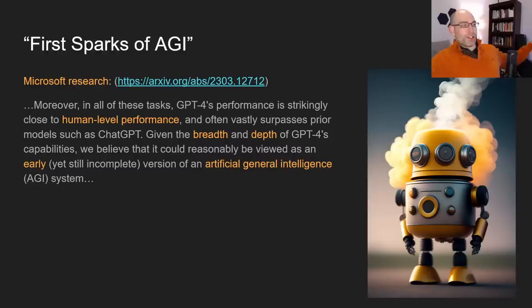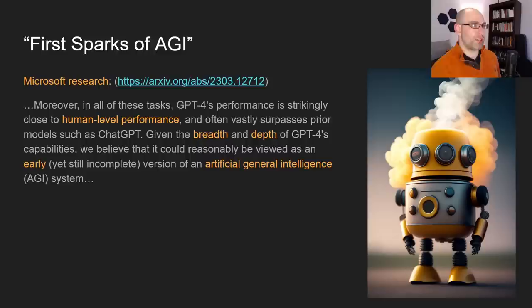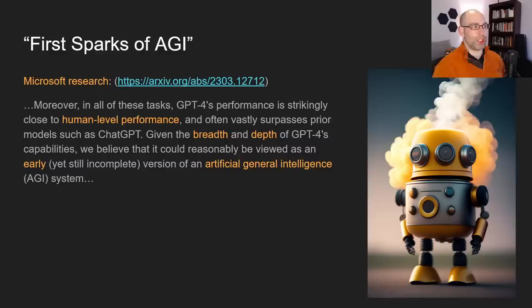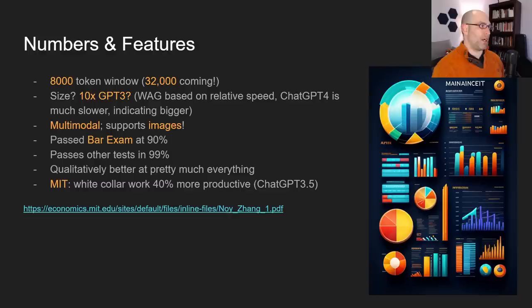Perhaps the spiciest thing that happened after the release of GPT-4: Microsoft Research — and this is Microsoft, not some small shop — says that GPT-4 represents the first sparks of AGI and that it performs strikingly close to human-level performance on many tasks. Given the breadth and depth of its capabilities, it could reasonably be viewed as an early yet incomplete AGI. That was the shot heard around the world, so to speak.